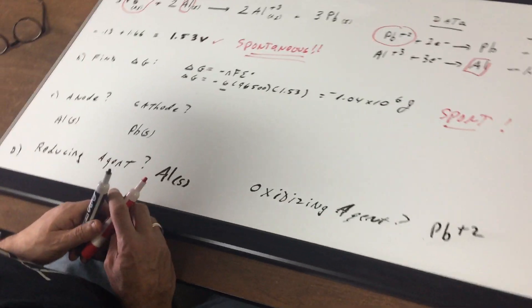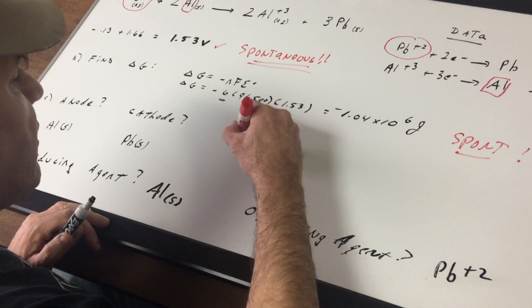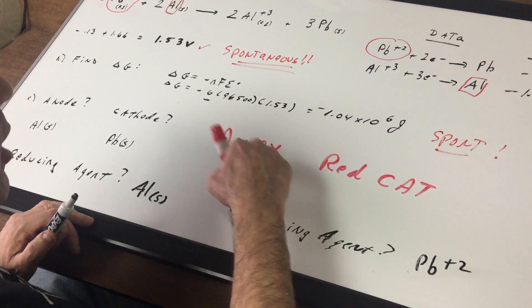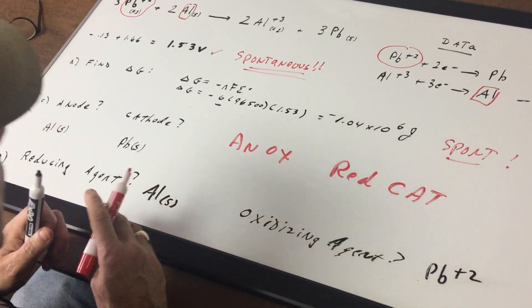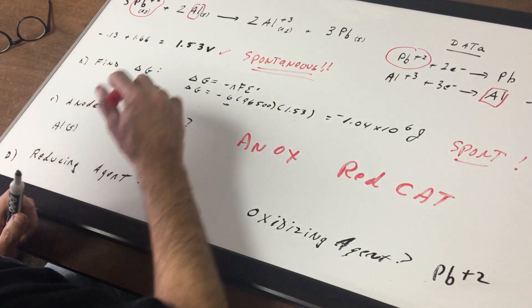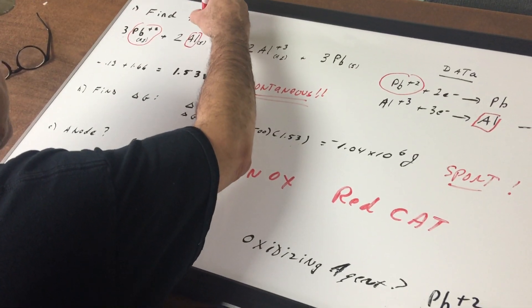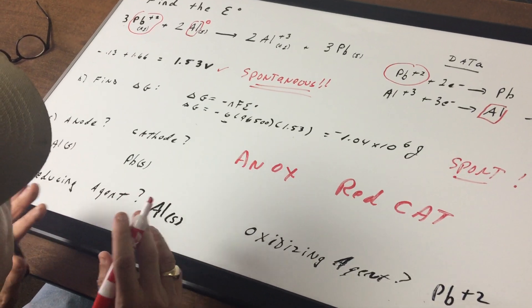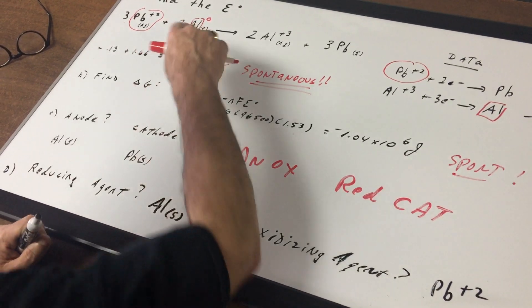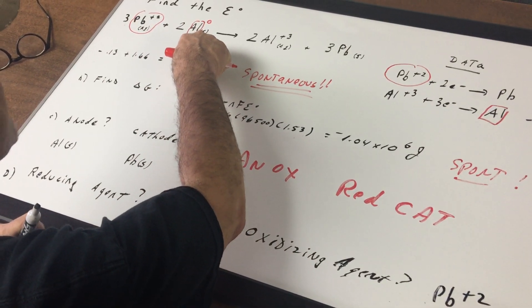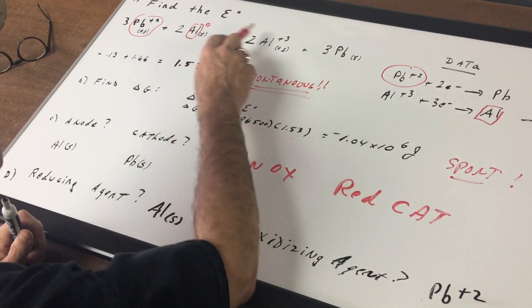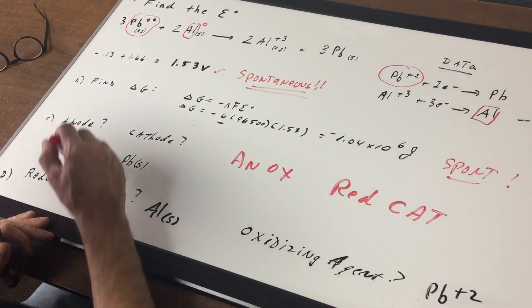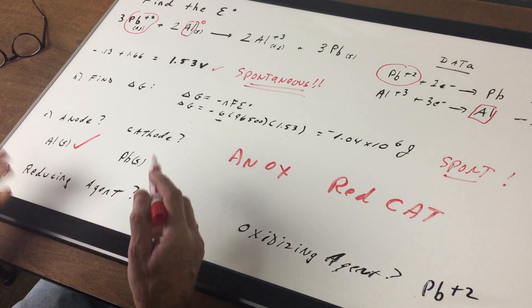Another DAT question they love is what's the anode? Never forget: an ox and red cat. The anode is the site of oxidation and reduction is at the cathode. What we're going to do is look with our eyes, let's look at the solid. Now an anode and a cathode are always made of solids. What's happening to the aluminum? It's undergoing an oxidation, it goes from a zero to a plus three. Because aluminum is undergoing an oxidation, aluminum is the anode, and by the process of elimination the other solid must be the cathode.